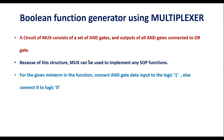In this video I will discuss how to generate a boolean function using a multiplexer, that is a boolean function generator using a multiplexer. In my previous videos we have studied what a multiplexer is, how it works, we have studied 2-to-1, 4-to-1, and 8-to-1 multiplexers. Now in this video we will study how to generate any boolean function with the help of a multiplexer.